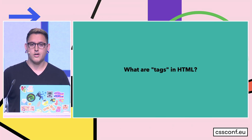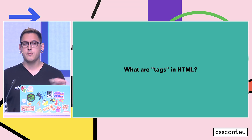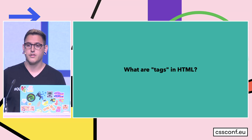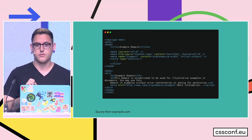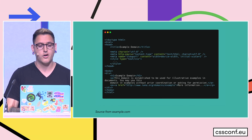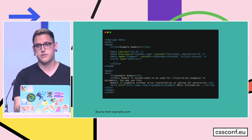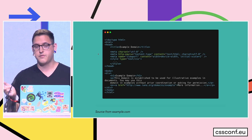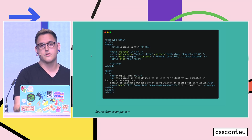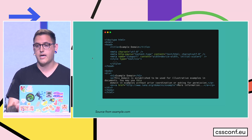Before we answer the question that's the name of this talk, even though I'm sure this audience, being CSS Conf, is already familiar, it's always good to be really explicit. If we view the source of any web page, you'll see a giant HTML document with two types of things: the first will be the doc type, which tells you what version of HTML you're looking at, and the rest of the document will be composed of tags.